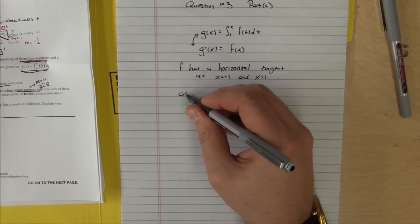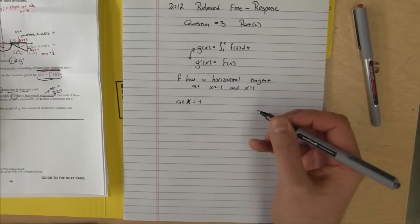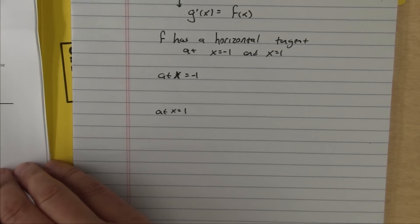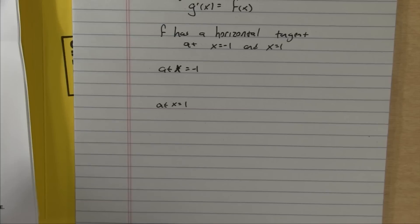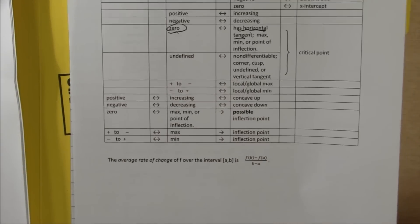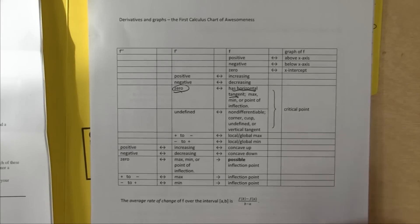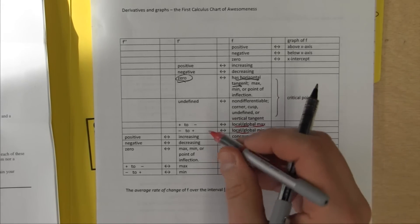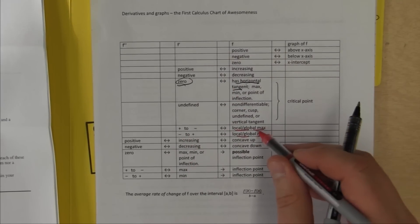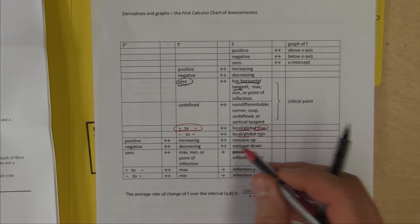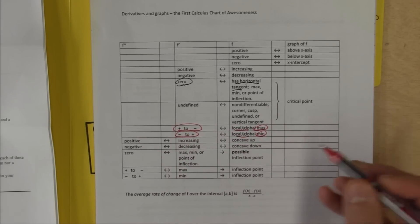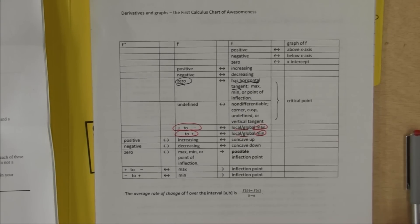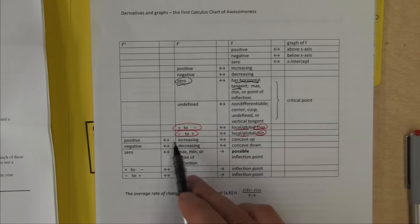At x equals negative 1, what happens? We need to recall how we'll know from looking at the derivative whether we have a relative minimum, relative maximum, or neither. If g prime changes from positive to negative, that's a max. If g prime changes from negative to positive, that's a min. If it doesn't do either of those things, then it's neither. At x equals negative 1, g prime is positive, positive, positive, and then it changes to negative.